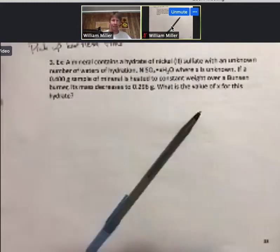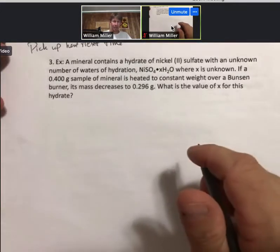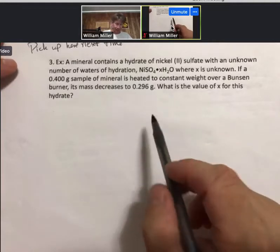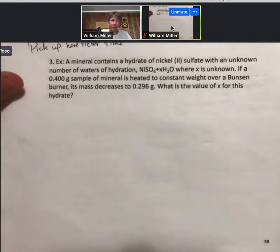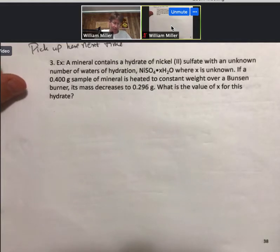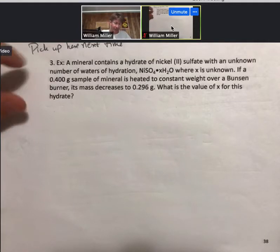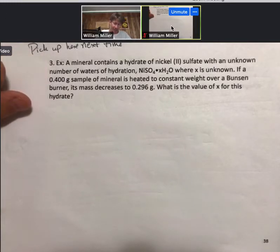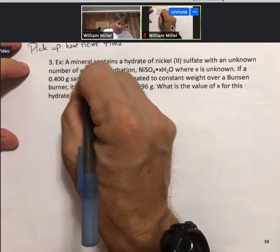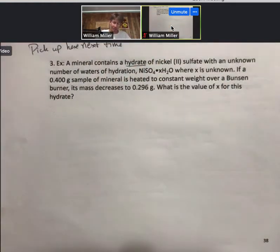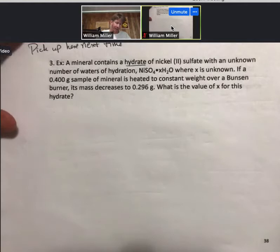Let's get to the lecture notes. We were working on what are called empirical formula problems. For the previous ones, you were given percentages of carbon, hydrogen, oxygen, and those were equal to the grams of those substances. This is what's called a hydrate problem. I'll read over it a little bit.